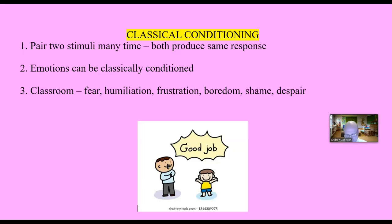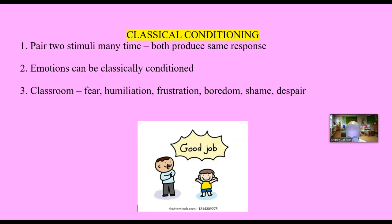Classical conditioning is when two stimuli are paired together many times — so many times that they produce the same result. For example, sour milk and a buzzer: sour milk produces a nauseous feeling. Pair them together enough times and the buzzer will give you the same response as the spoiled milk. That is classical conditioning in a nutshell. Both produce the same response.